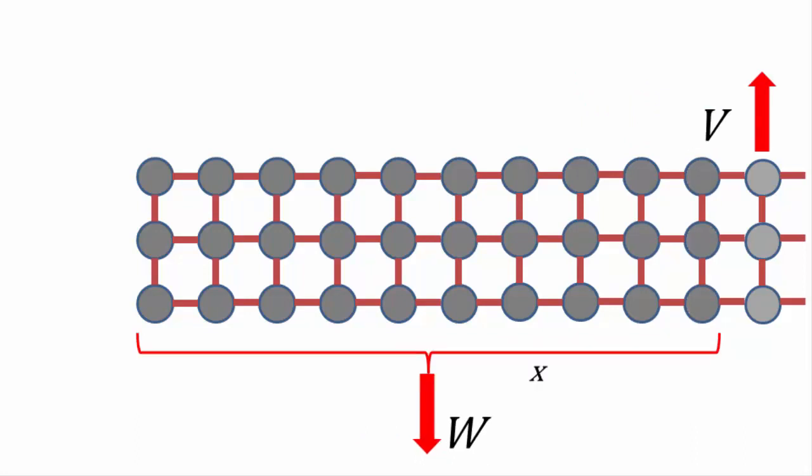If the length of the section being supported by the shear force is x, then the weight of that section is given by its uniformly distributed load, or UDL, multiplied by the length of that section. If you have forgotten what a UDL is, go back to the UDL video for a refresher.